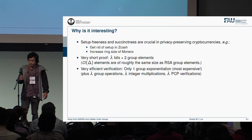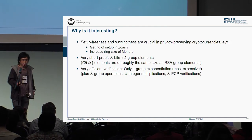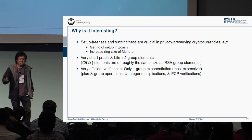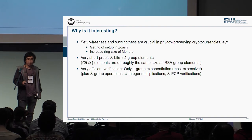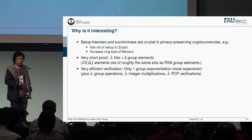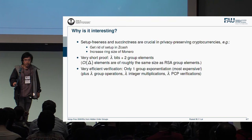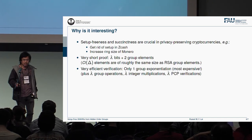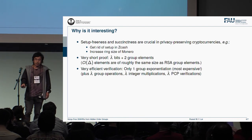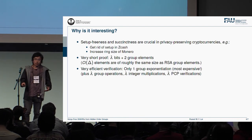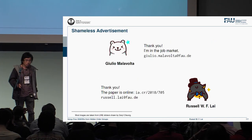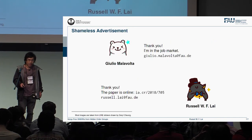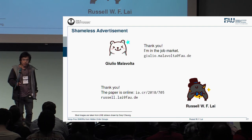So why is it interesting? Because blockchain. For blockchain, it's very important to have a short proof size, which is great because we just have two elements. The verifier efficiency is also great — we just need one group exponentiation plus some order of Lambda quite efficient operations. With this, I would like to conclude the talk. The paper is actually online, and Julio here is in the job market. Thank you.